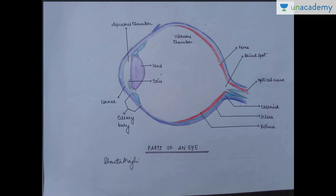I will explain it to you in the diagram. This outermost layer represented in purple or blue is the sclera. The layer slightly below the sclera is the choroid. The choroid is the layer below the sclera, and the layer labeled in red is the retina. So the outermost line is the sclera, below it is the choroid, and below that is the retina.